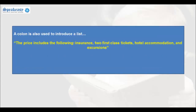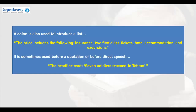A colon is also used to introduce a list. For example: 'The price includes the following: insurance, two first class tickets, hotel accommodation and excursions.' It is sometimes used before a quotation or before direct speech. For example: 'The headline read: Seven soldiers rescued in Tehran.'